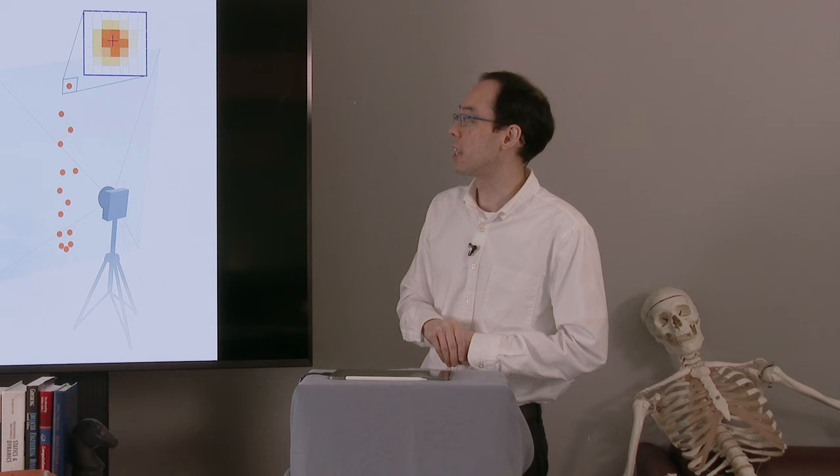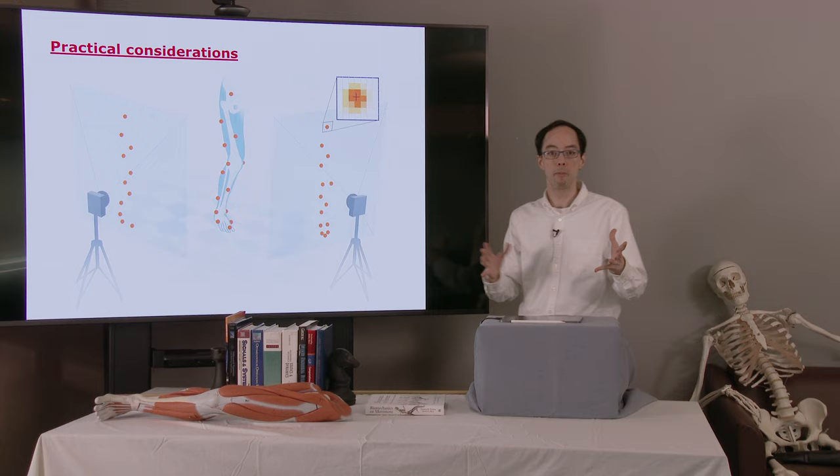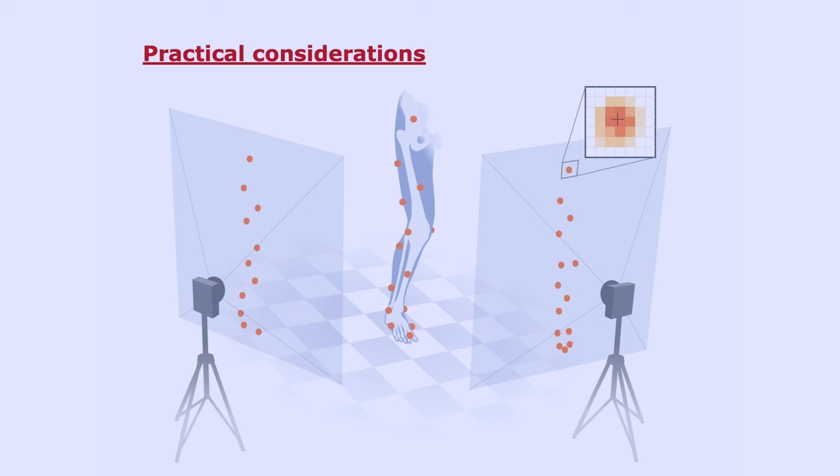There are some practical considerations we should think about here. Remember that each camera can see only a certain volume in the room, not the entire room. So you might think, well, let's just put all the cameras as far back as possible so they can see, you know, get the best possible viewing angle and see the most amount of the room possible.